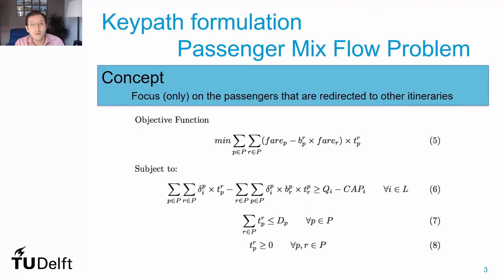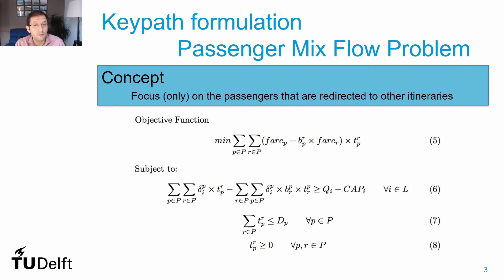In the last video lecture, we discussed the key path formulation of the passenger mix flow problem. We came to the conclusion that the model resulting from this formulation was of the same size as the standard formulation, which in fact was easier to understand than the key path formulation. So why do we formulate our problem as such?